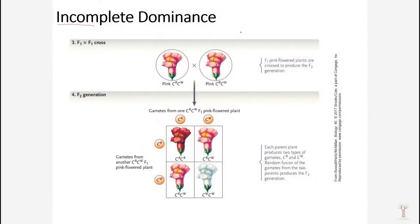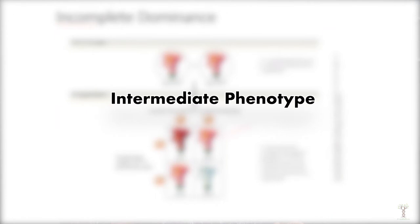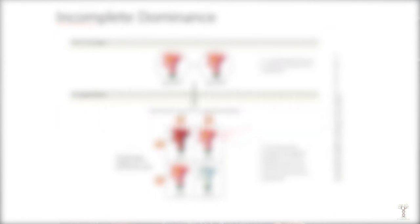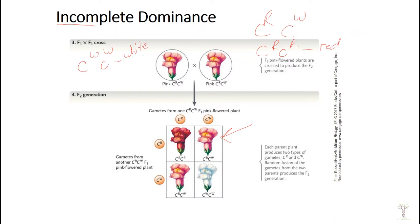The next example is called incomplete dominance. When we have an incompletely dominant trait, that means there is an intermediate phenotype. So let's suppose for a flower color — we'll use a big C to indicate color — we can have a red allele or we can have a white allele. When we have a plant that has two red alleles the plant will be red. When it has two white alleles it will be white. But if it has a red and a white allele then it will look pink.